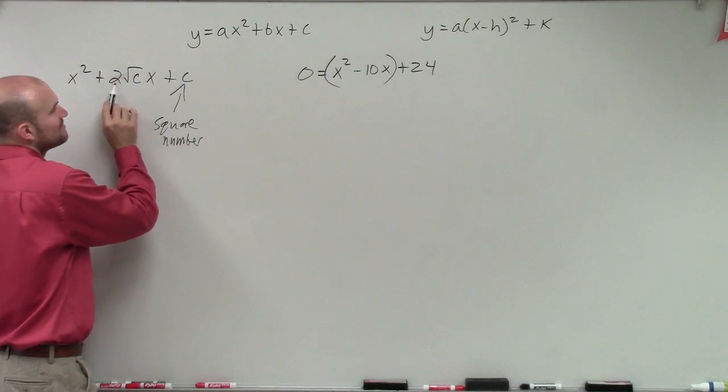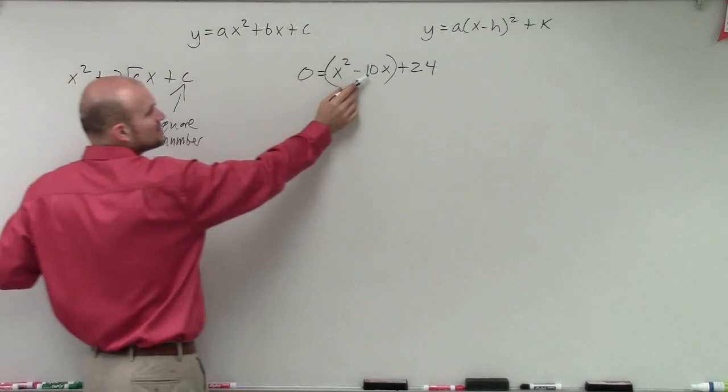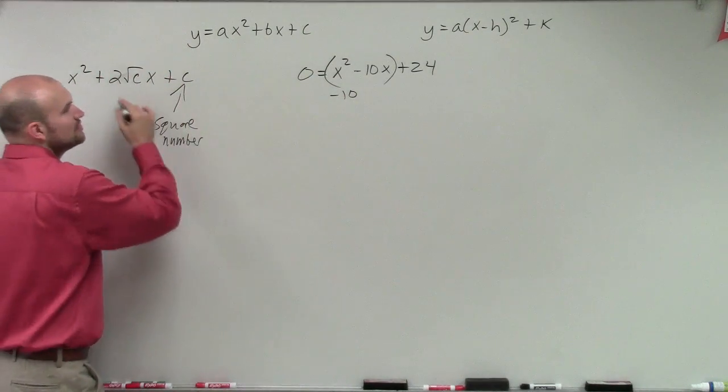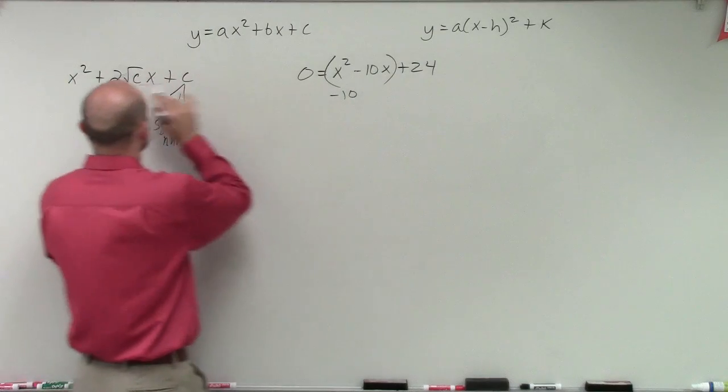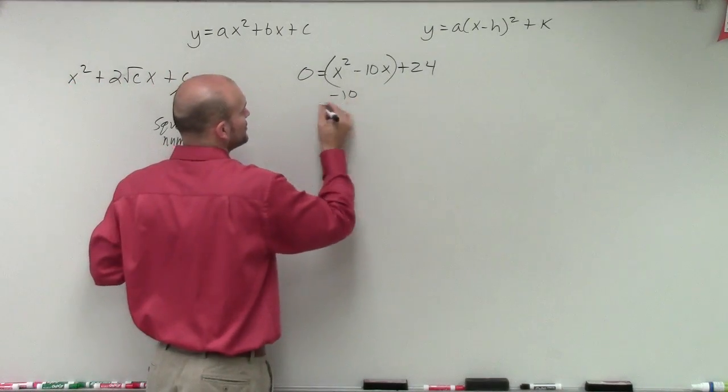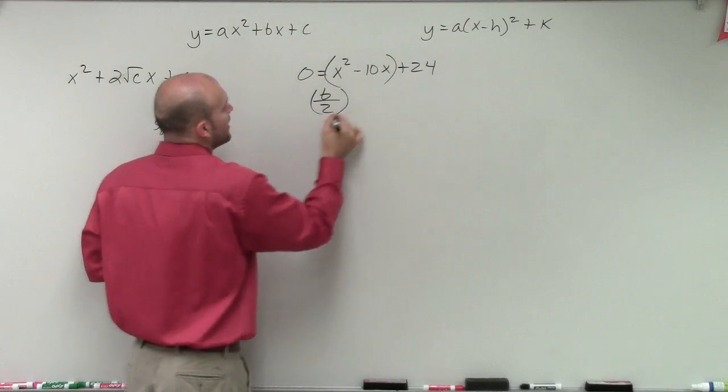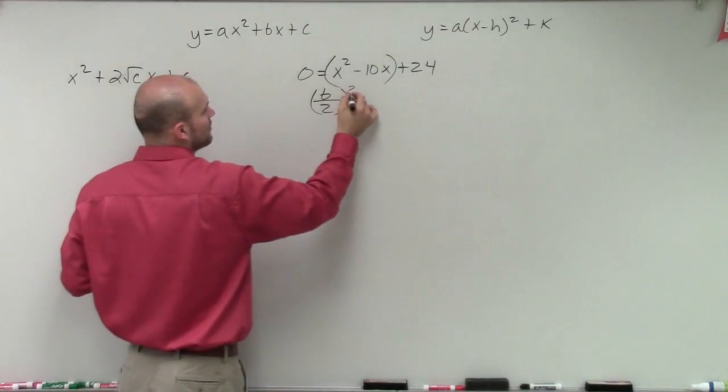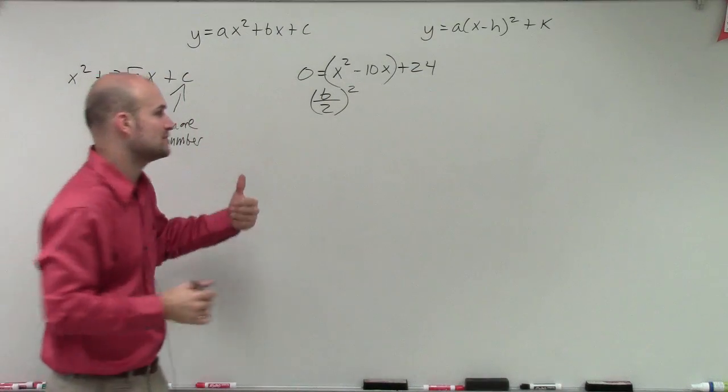Now remember these are related times 2 times the square root of c. So what I'm going to do is I'm going to take this number, and what I'm going to do is I'm just going to undo all this stuff. Instead of being multiplied by 2, I'm now going to be divided by 2. So instead of multiplying, I'm going to divide it. And then instead of square root, I'm going to square it.